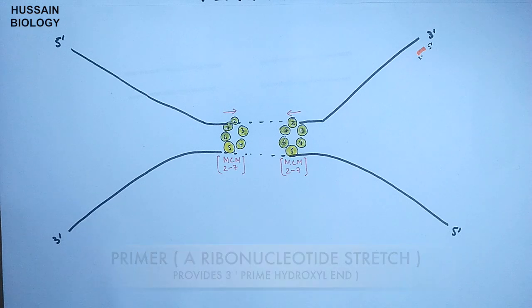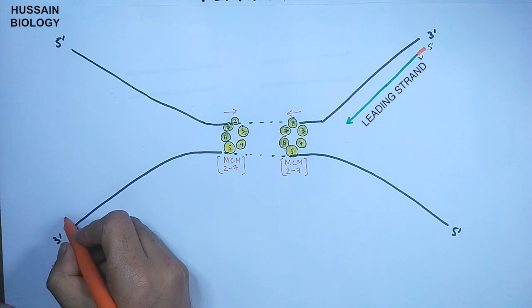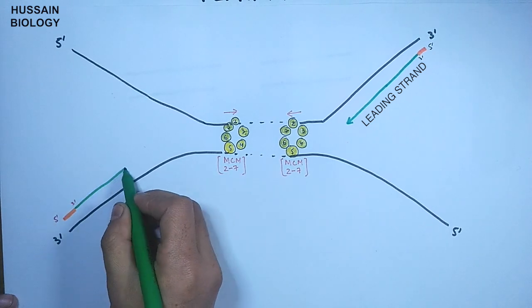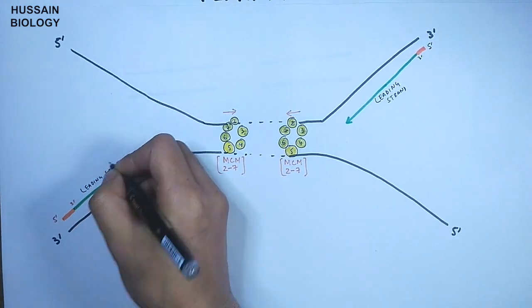This 3 terminus end will be extended by polymerases in the form of leading strand. And in the same way on the lower left corner we have the same thing going on where a primer is added and the 3 terminus hydroxyl end is extended in the leading strand synthesis. So this is the leading strand synthesis first.